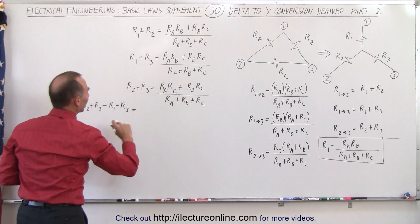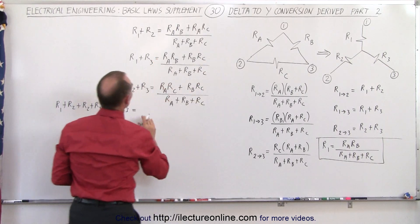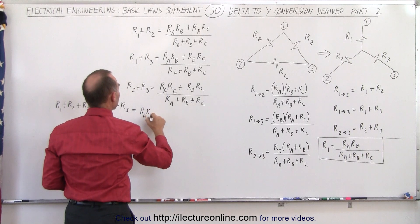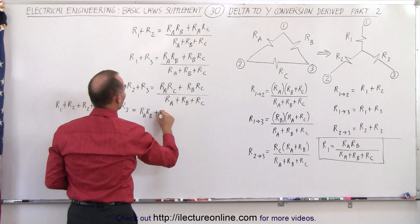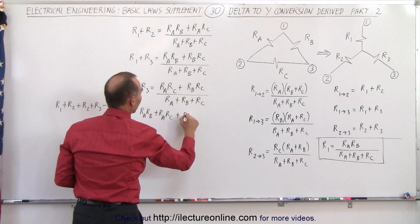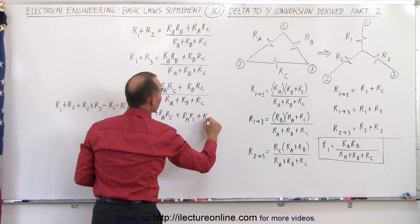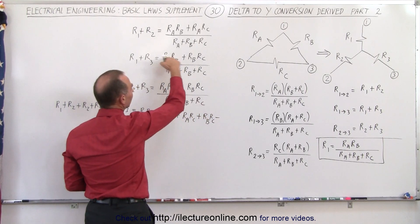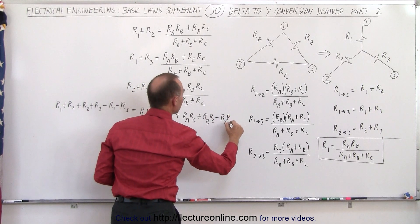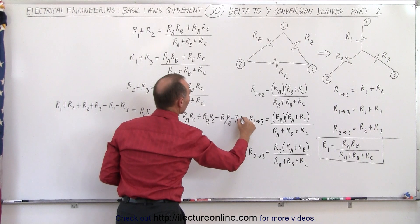And on the right side of course we have to do the same. We're going to add this to this and subtract this from it. So we end up with Ra Rb, plus Ra Rc, plus adding these, Ra Rc, plus Rb Rc. And then subtract from that these two which is Ra Rb, and minus Rb and Rc.